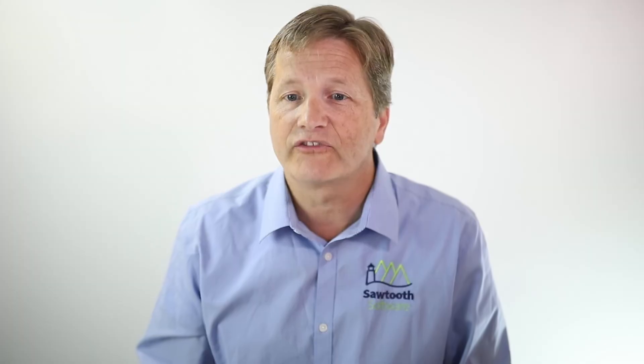As an example, we looked at nine different data sets. One of these data sets turned out like this: with the algebraic approach, willingness to pay was $106; with the two-product simulation approach, it was $99; and the sampling of scenarios approach gave us a willingness to pay estimate of $79. This is pretty typical of what you'll see across different CBC studies.